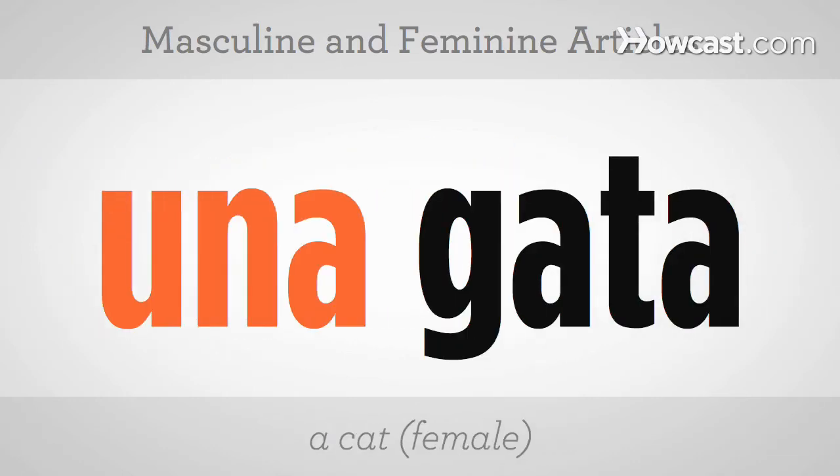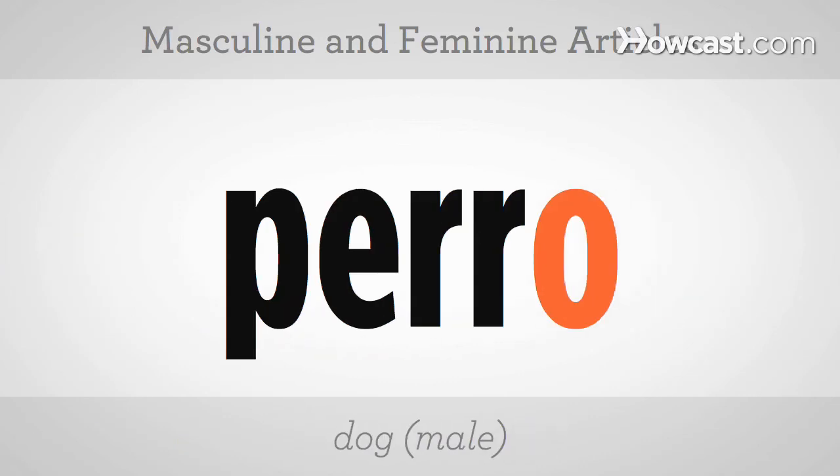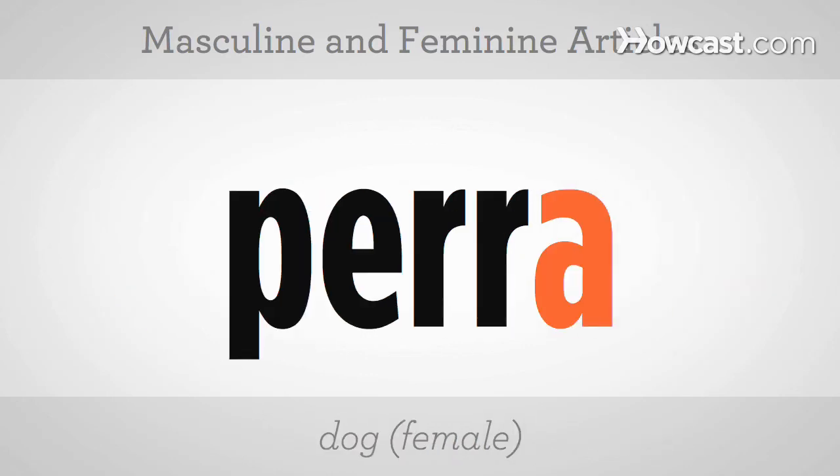A female cat is 'una gata,' and a male cat is 'un gato.' Does this make sense to you? If 'perro' is dog, how would you say the female dog? That's right — 'perra.'